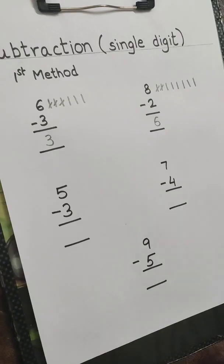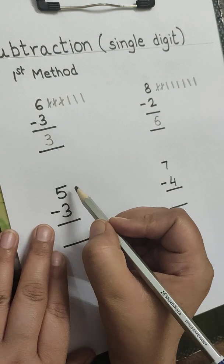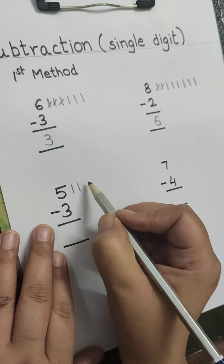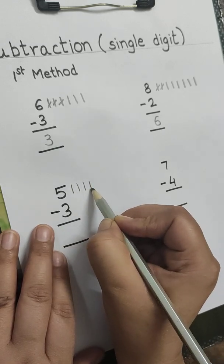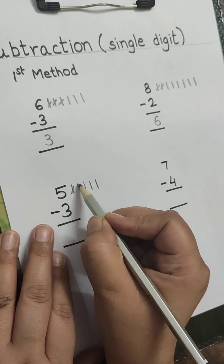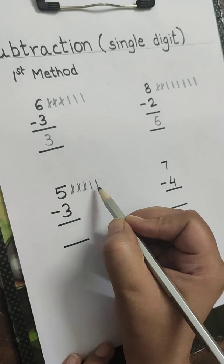This we can do with different objects also to make the concept of the minus, that is subtraction, easy. Coming back to the sum, we will draw 5 lines: 1, 2, 3, 4, 5. Minus 3: 1, 2, 3 lines minus. Remaining: 1, 2.